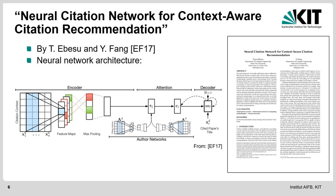The paper's title is Neural Citation Network for Context-Aware Citation Recommendation. The neural network architecture is displayed here. Basically it consists of an encoder-decoder network with an attention layer, and it particularly also contains an author network — so you not only provide the citation context, but also the citing author and the potential cited author.